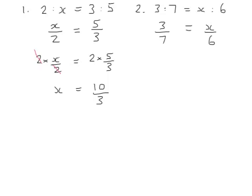Now, in this equation with fractions, we have x divided by 6 on the right hand side, so we want to multiply both sides by 6. So we'll have 3 sevenths times by 6 and x over 6 times by 6. This will mean that the 6s will cancel and we will be left with x equaling 18 over 7.